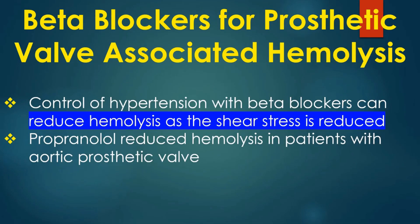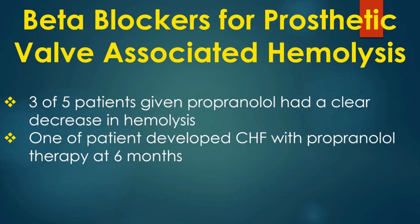Control of hypertension with beta blockers can reduce hemolysis as the shear stress is reduced. One of the earliest studies used propranolol to reduce hemolysis in patients with aortic prosthetic valve. Three out of five patients given propranolol had a clear decrease in hemolysis. One patient developed congestive heart failure with propranolol therapy at 6 months. Others hypothesized that lower heart rate was the mechanism of reduced hemolysis.